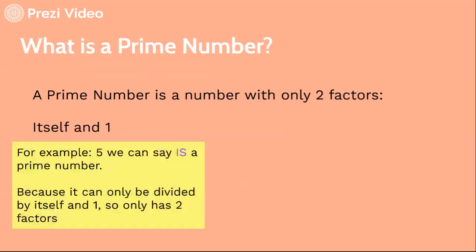For example, 5 we can say is a prime number because it can only be divided by itself and one, so it only has two factors.